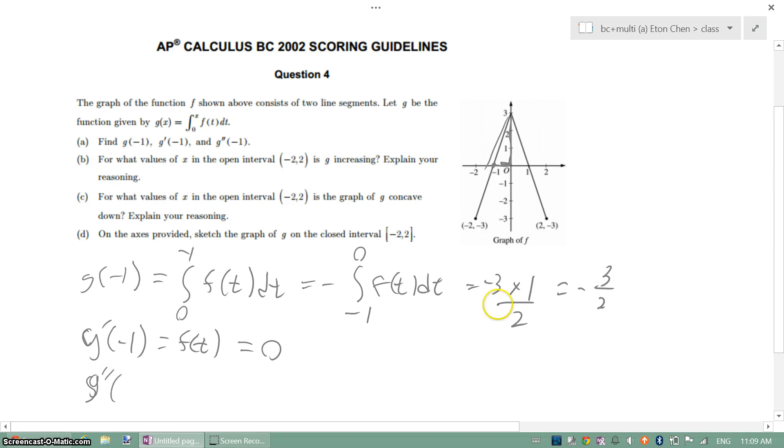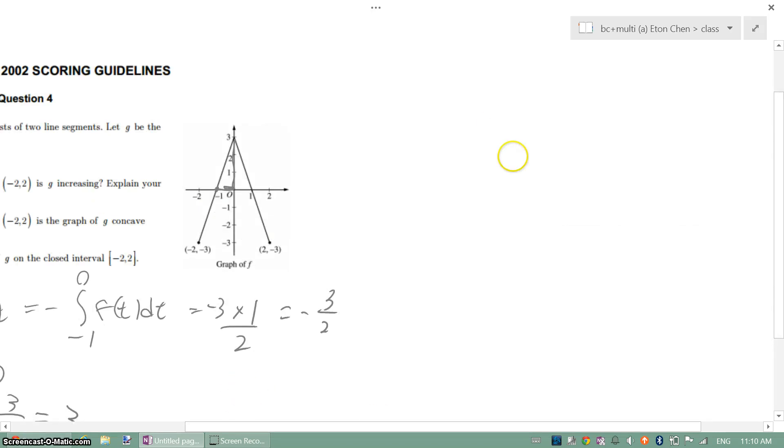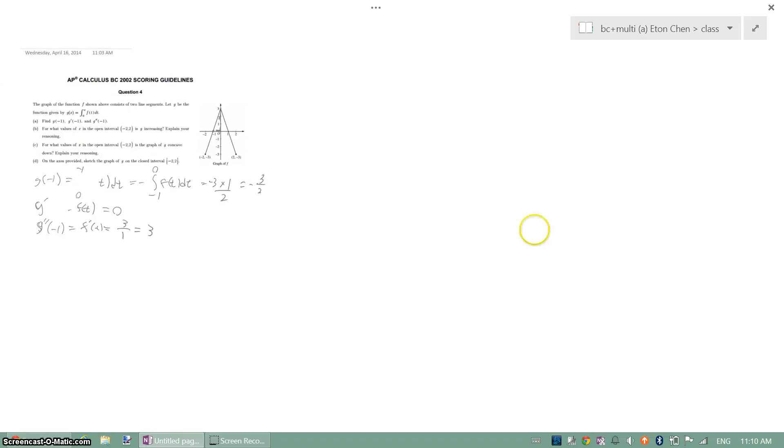Second derivative of g will equal to derivative of f. And if we look over here, we can tell it is decreasing, and just do the slope. Slope is rise over run. It rises 3 over run of 1, so it's 3. So the rise over run. Alright, there you go.